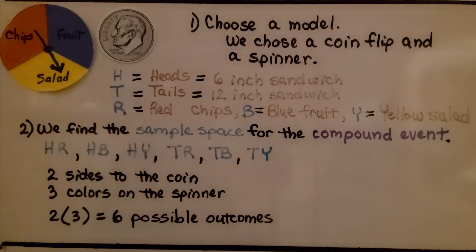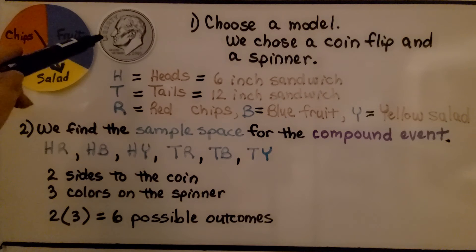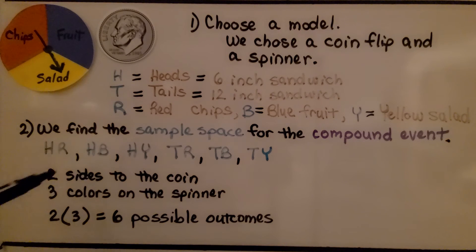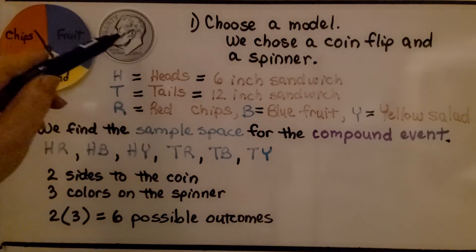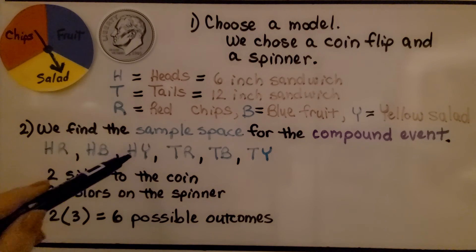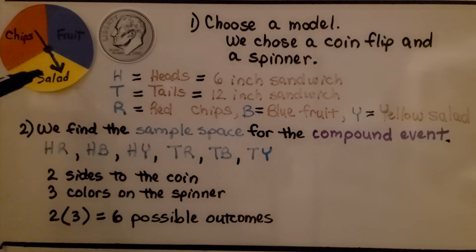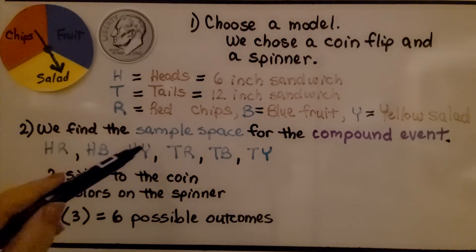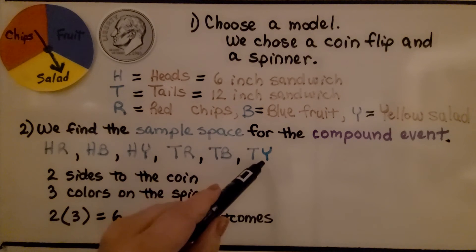Now we find the sample space for the compound event. We have heads red, which gives us a 6-inch sandwich with chips; heads blue, which gives us a 6-inch sandwich with fruit; heads yellow, which gives us a 6-inch sandwich with salad; and tails red, tails blue, and tails yellow.